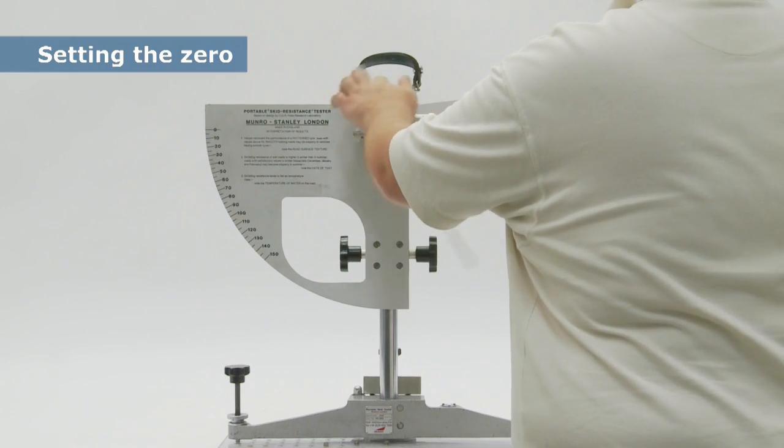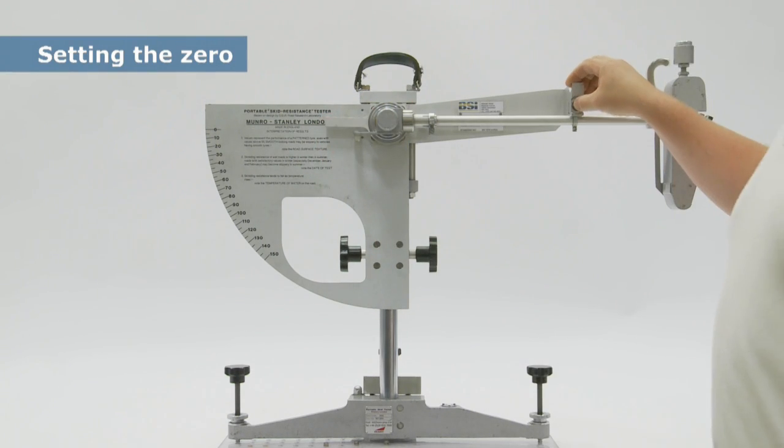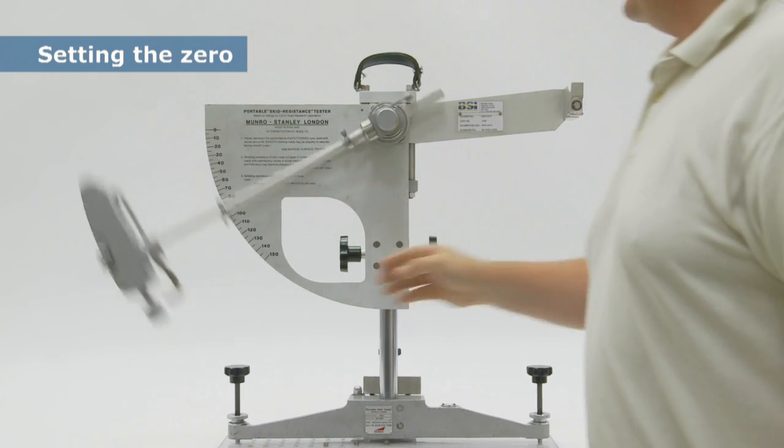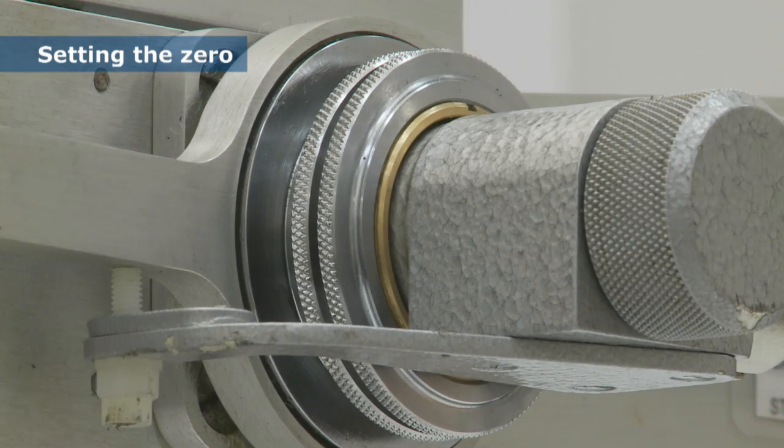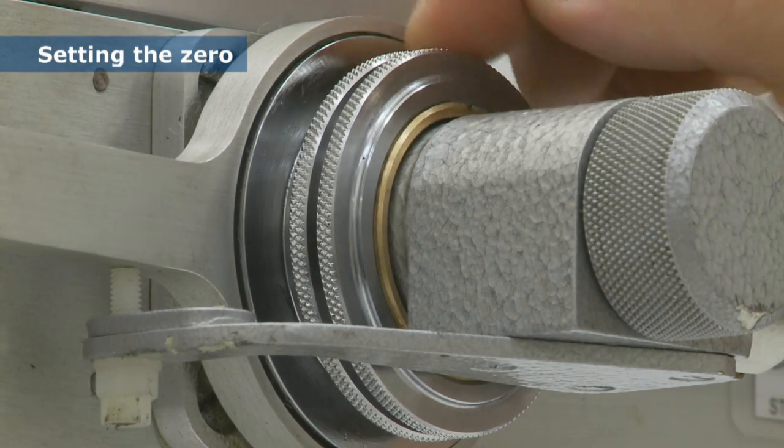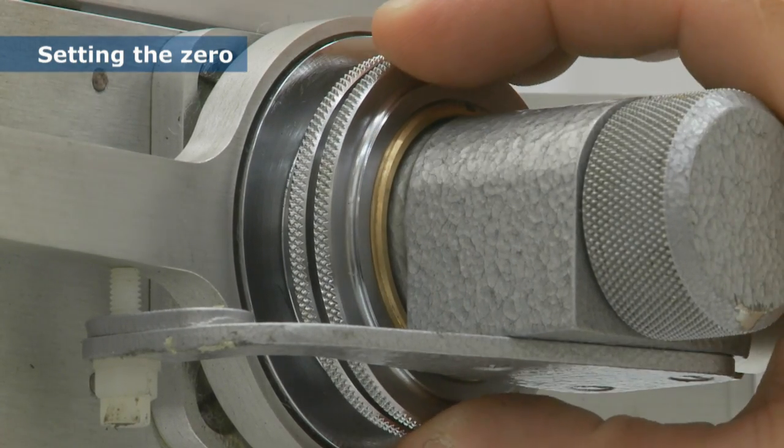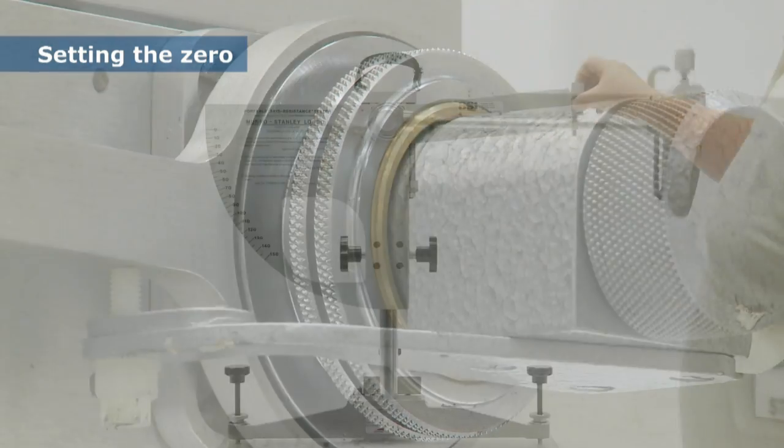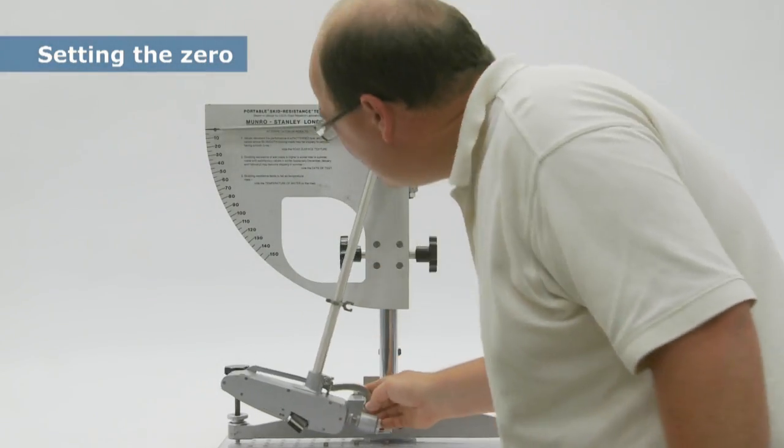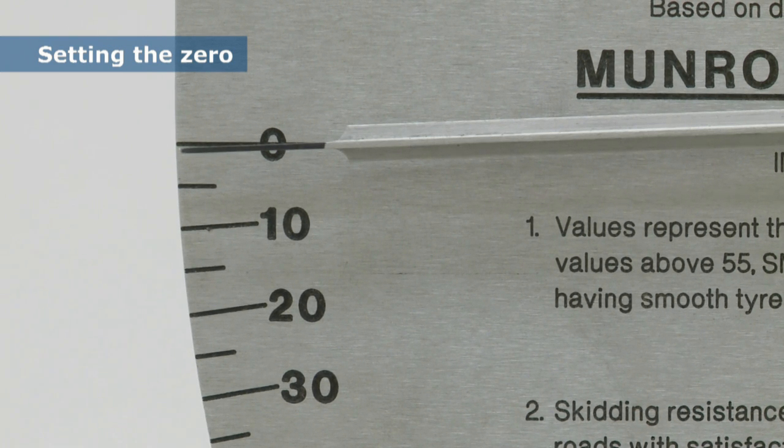The zero must be checked and adjusted each time the pendulum is set up. With the arm raised so that it won't catch the surface, the arm is released as if taking a measurement and the finishing position of the needle is noted. Precise adjustments can be made using the friction ring which is then locked in position by the outer ring. The zero is re-checked and the process repeated until a consistent zero reading is obtained.